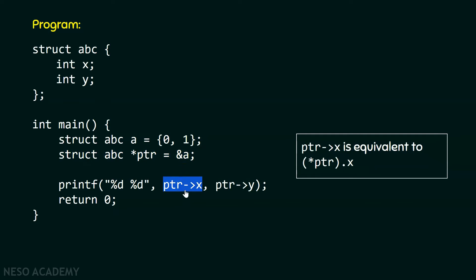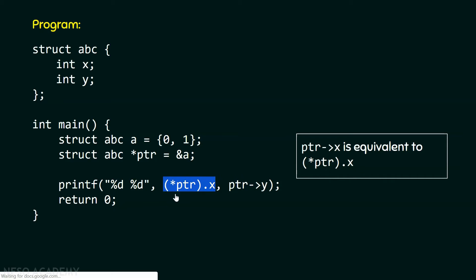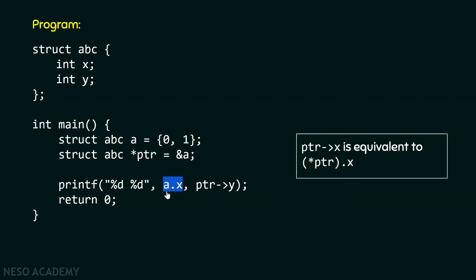After that, we have the statement ptr arrow x. ptr->x is equivalent to (*ptr).x — that means we first dereference the pointer and then access the member. I can replace ptr by &a because ptr contains the address of a. The star and ampersand cancel out, so we are left with a.x, which means we are accessing member x of variable a. x contains value zero, so this gets replaced by zero.